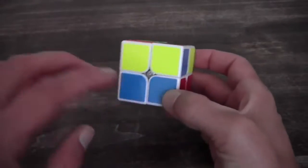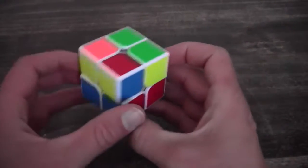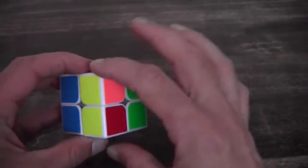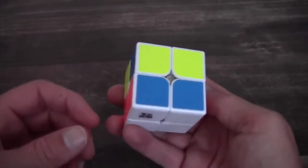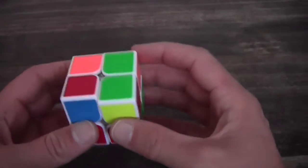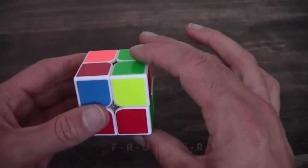In this case you have a block in front or in the back and the other ones are opposite of each other. And what you can do then is you hold the block to the left and you perform the following algorithm.